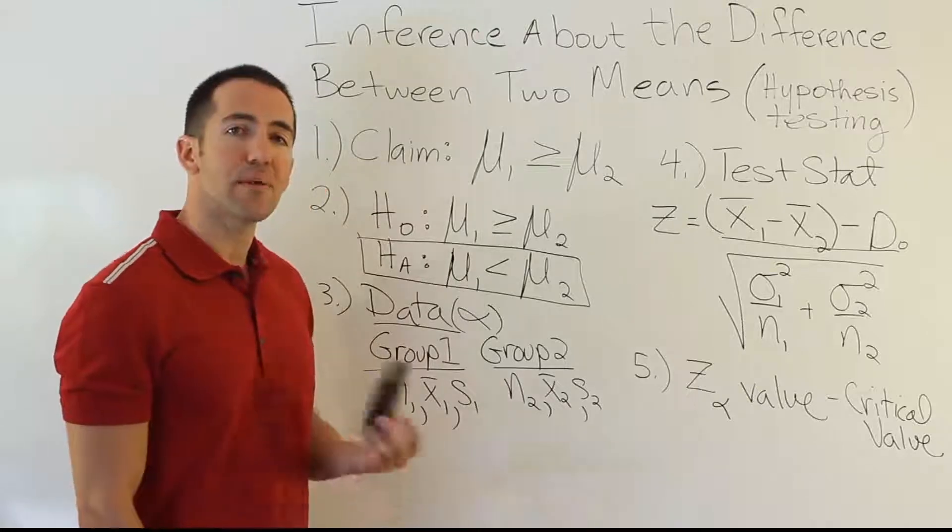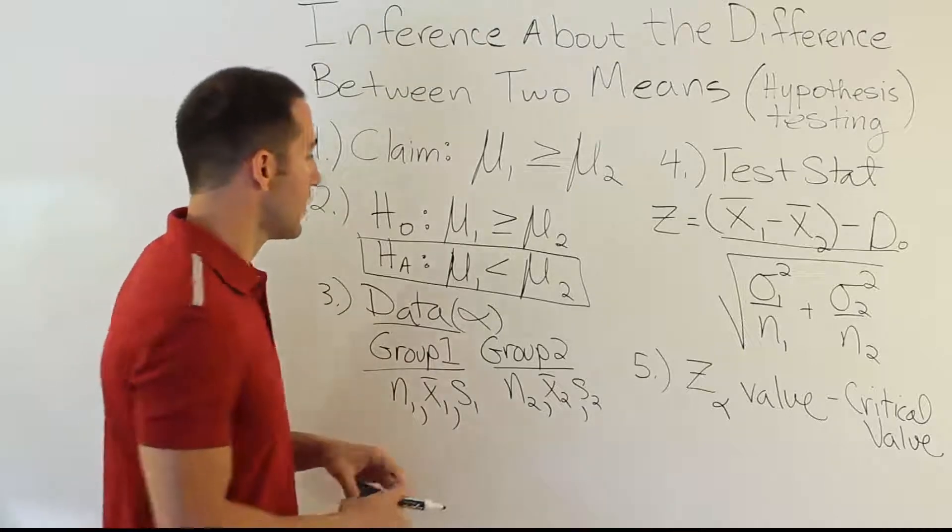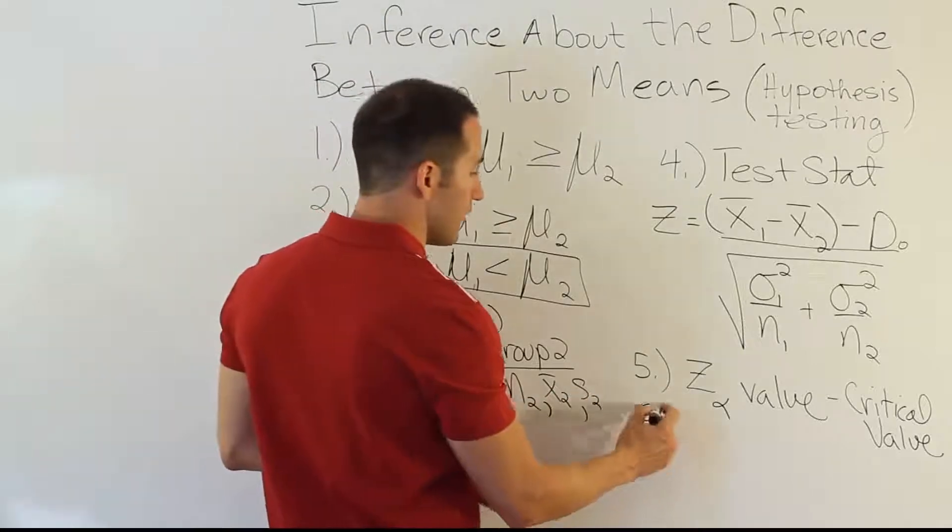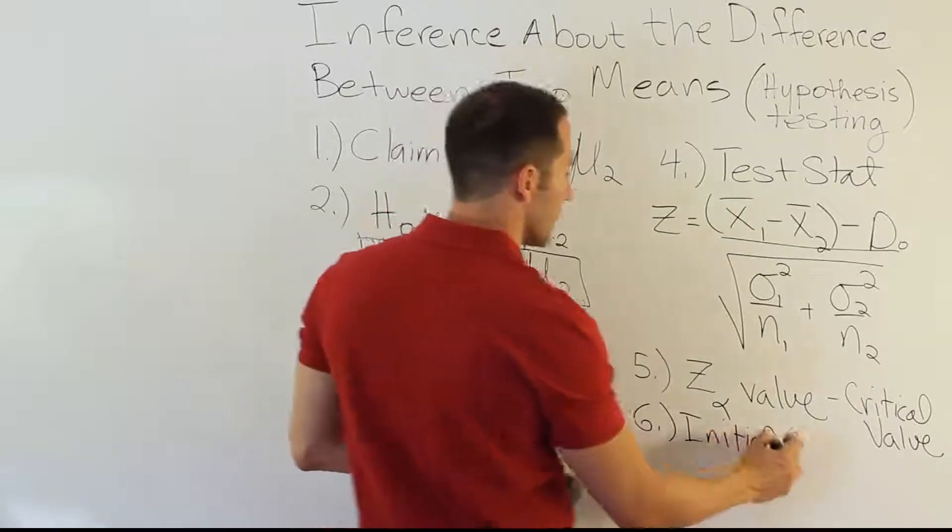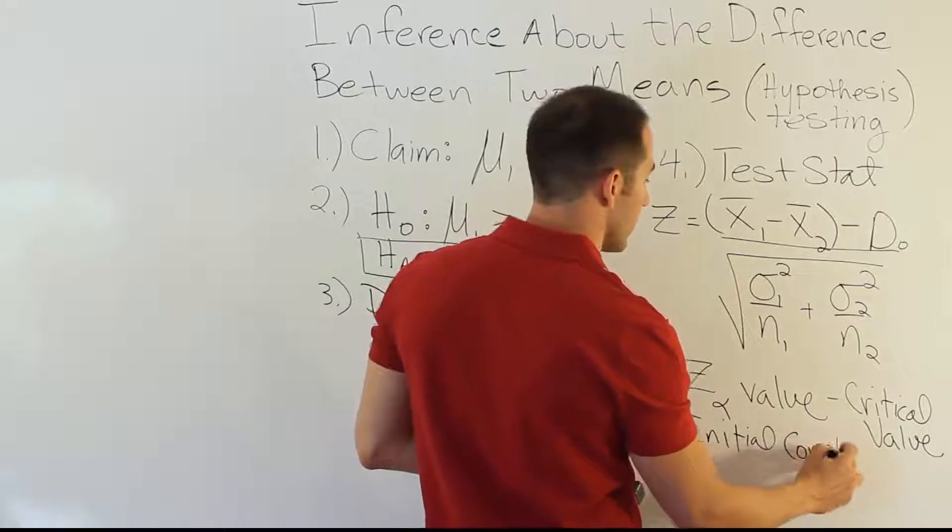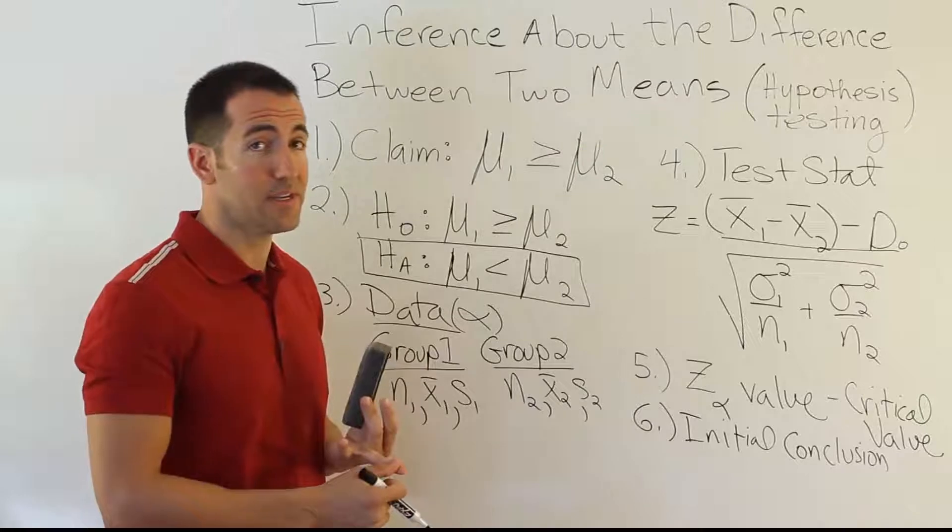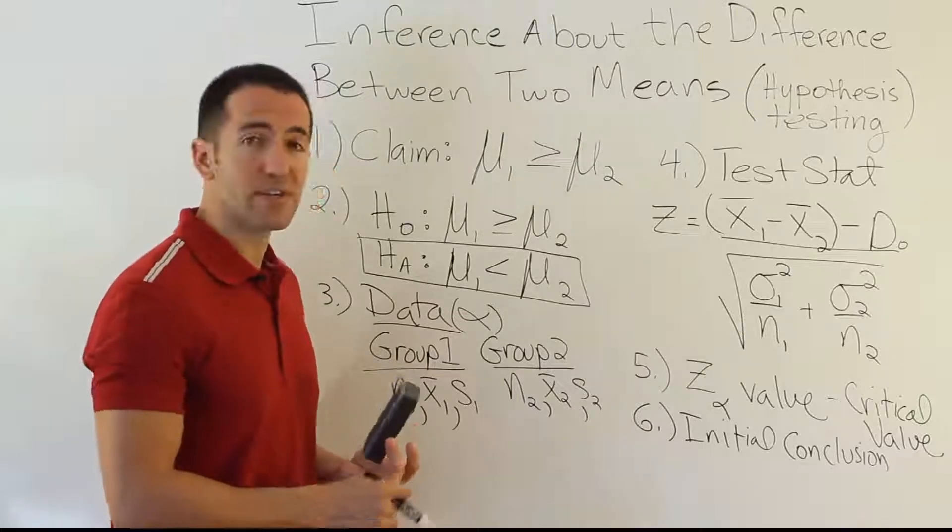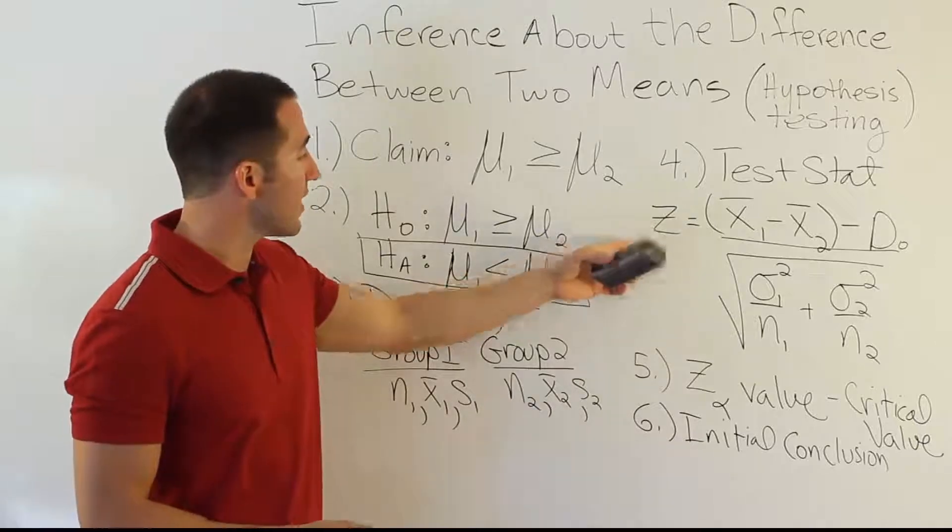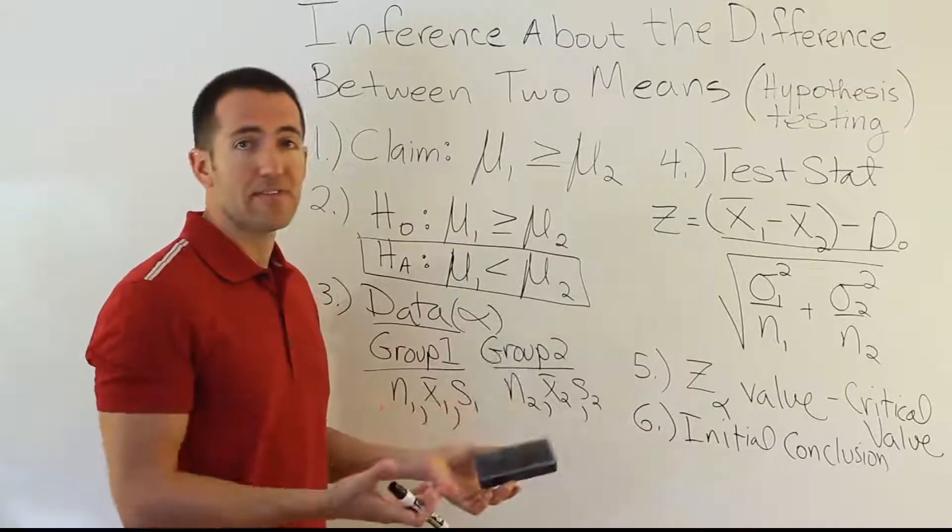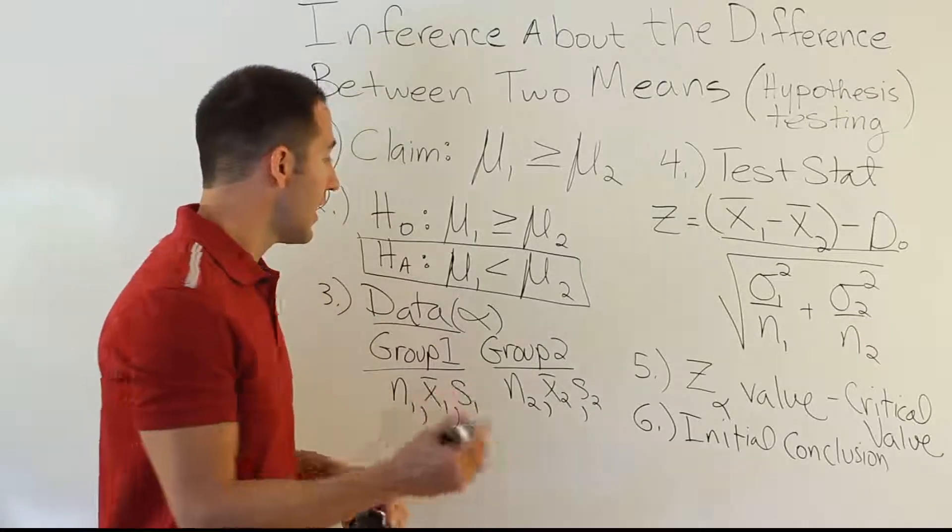And then lastly, we have the same two steps we had before, initial conclusion and final conclusion. That's steps 6 and 7. So in step 6, you form the initial conclusion. And remember, our initial conclusion was whether we rejected the null or whether we didn't reject the null. Either we rejected it or we didn't. That's basically your initial conclusion. It's the same here as well. You're going to compare this test stat to your critical value. If your test stat lands in the rejection region, you go ahead and reject H0. If it doesn't, you say you don't reject it.